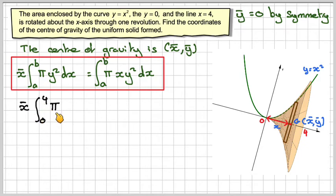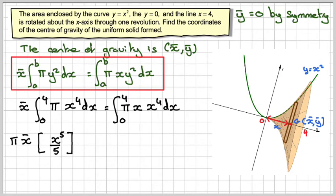So x̄ from 0 to 4 of π y², so it'll be x squared squared, which is x to the fourth dx, equals from 0 to 4 of π times x times y squared, so again it's x squared squared, which is x to the fourth. We take the π out of the integral sign. If we integrate x to the fourth, we get x to the 5 over 5 from 0 to 4. And that equals π from 0 to 4 of x to the 5, x times x fourth.